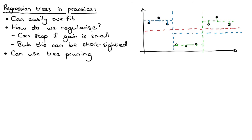So there's a problem here. On the one hand we need some form of regularization, but because we have a greedy algorithm it might be short-sighted — we might do something that seems good now and then miss out on a big gain later on.